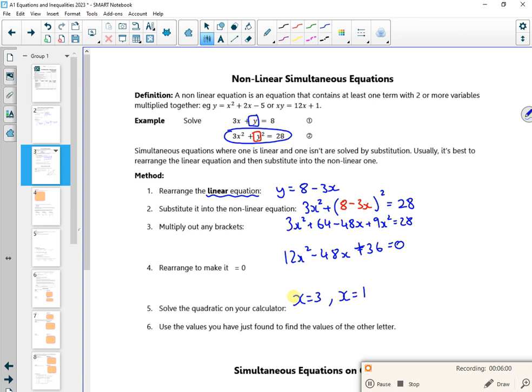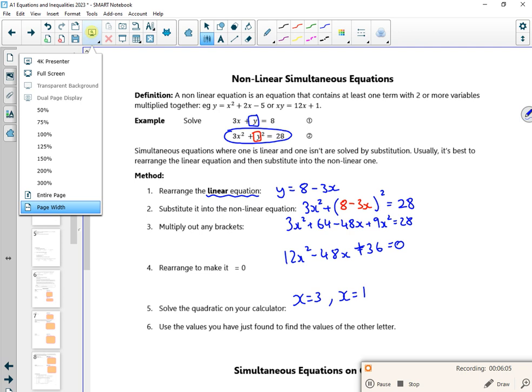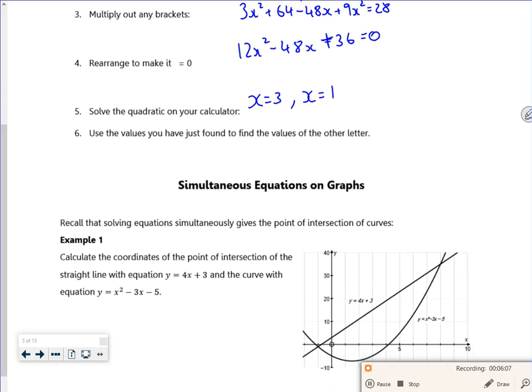There. So that gives me the two solutions. And now if I just sub it into the easier equation, so if I sub it into y equals 8 minus 3x. So when x is 3, it's going to be 8 take 9, so y is minus 1. So I've got 3 comma minus 1. And when x is 1, that will give me y as 5. So 1 comma 5. There you go. And I've got my two coordinates. That's that bit done.